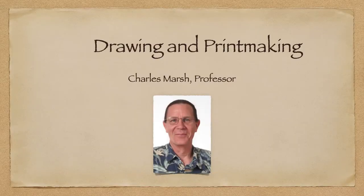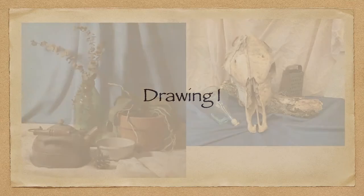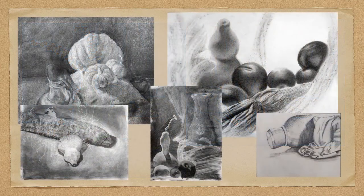This is Charles Marsh. I teach primarily drawing and printmaking here at Florida School of the Arts. In Drawing One, we work with the basics — we start students with perspective, cast shadows, composition, line, shape, value, form, and texture. All of those basic things that you need to know.